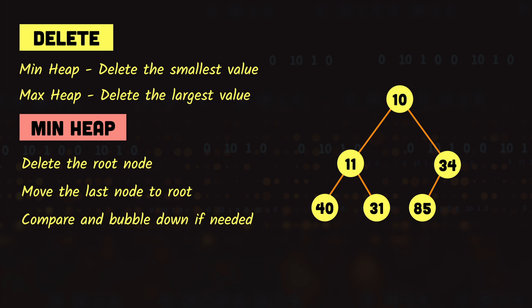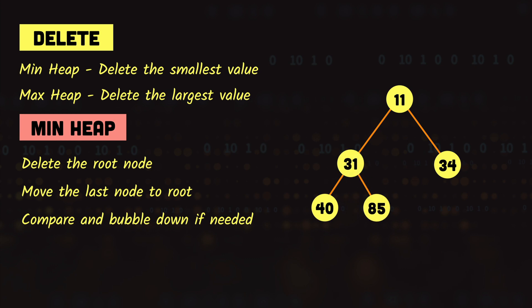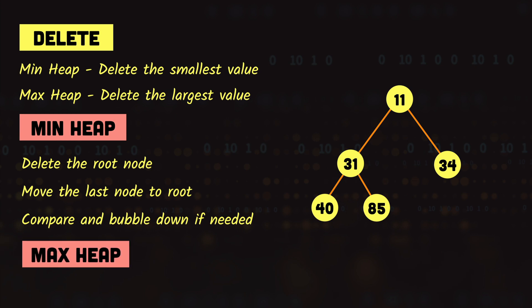Let's take another example. We remove 10 and move 85 to the root. 85 is compared with 11 and 34 — 11 is the smallest, so 11 is swapped with 85. Then 85 is compared with 40 and 31 — 31 is the smallest, so 85 is swapped with 31, and the heap is restored. Deletion in max heaps works the same way, except we look for a greater node value when bubbling down. The algorithmic complexity of deleting from a heap is also logarithmic.